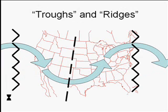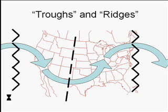Just to introduce you to a little bit of the notation we're going to be using: a trough is indicated with a dashed line, like what you see in Colorado and in New Mexico. That just illustrates the axis of the trough in the jet stream. Similarly, the zigzag line indicates a ridge — the ridge that lies off the east coast of the United States or off the west coast of the United States in this map.